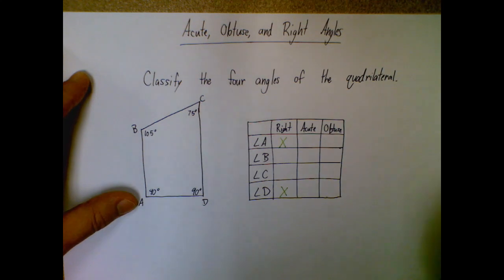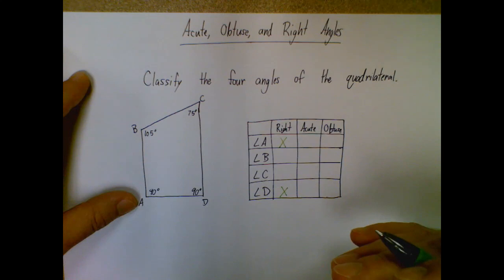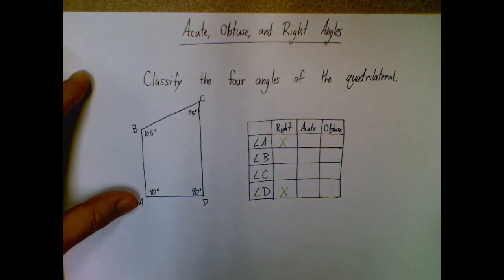Beyond that, we're looking for acute and obtuse. So acute are less than 90 degrees, and obtuse are larger than 90 degrees, but less than 180 for being technical.